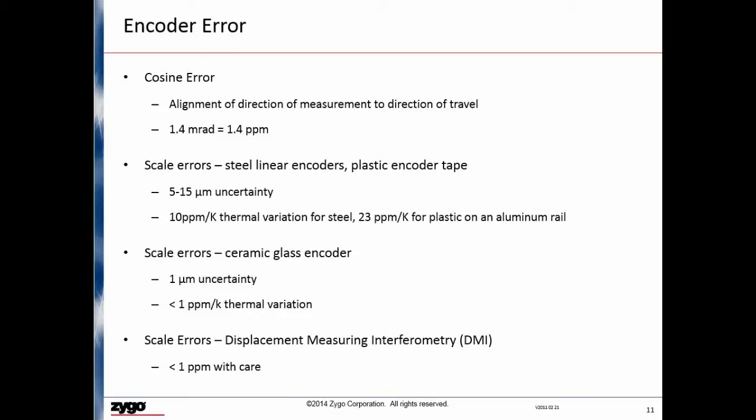Scale errors, on the other hand, can be significant. There are many types of materials used for linear encoders. Plastic, steel tape, and glass ceramic are the most common. Steel and plastic tape suffer from uncertainty due to the quality of the material and the ability to apply it properly to the slide itself. This uncertainty is in the range of 5 to 15 microns. In addition, steel encoder tape has a thermal expansion coefficient of about 10 parts per million per degree, and plastic tape stretches with a substrate, so when applied on an aluminum rail it has an expansion coefficient of about 22 parts per million per degree. Glass ceramic scales can reduce this error significantly, but they are much more expensive and difficult to use. The best solution is a distance measuring interferometer, which we will discuss later in the presentation.